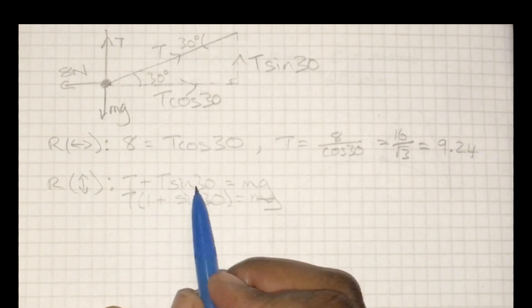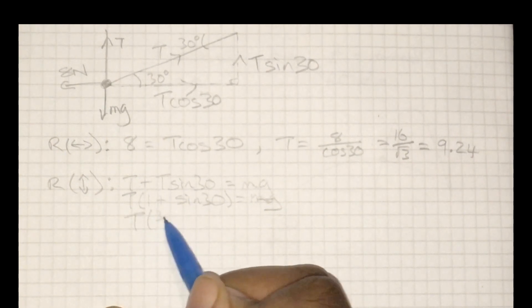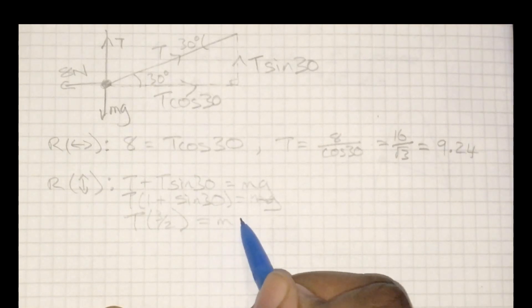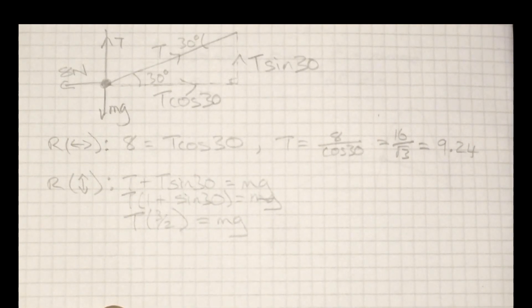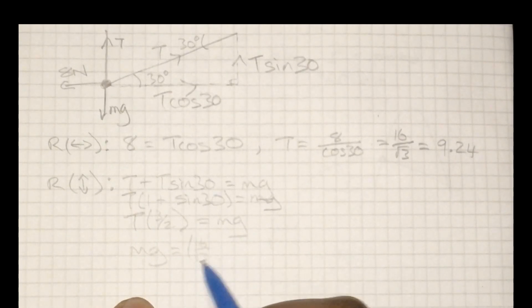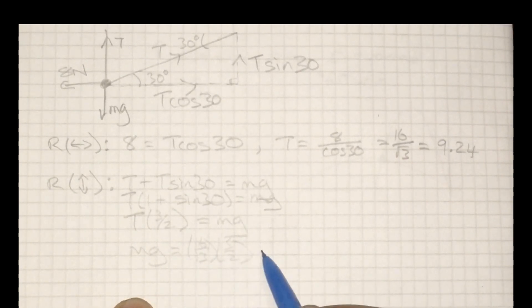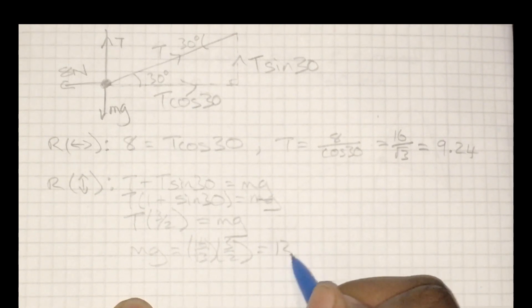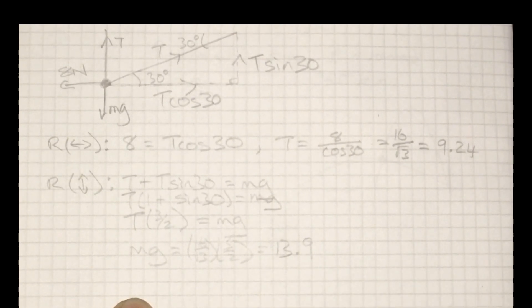Rearranging and substituting in the value that I found previously for t, sine 30 - we know the value, it's a half - so this expression simplifies nicely. Okay, an expression for the weight which counts down to 13.9 newtons, so weight of 13.9 newtons.